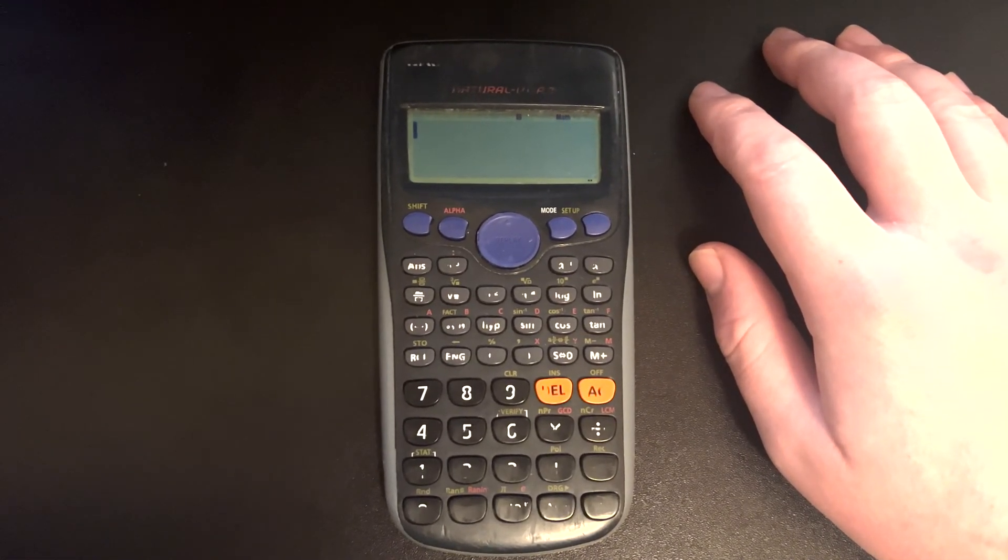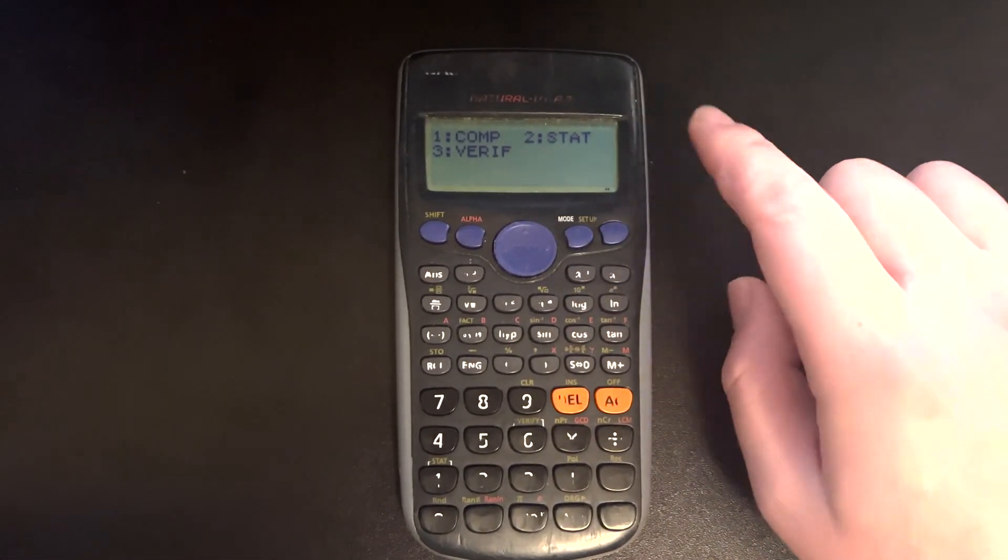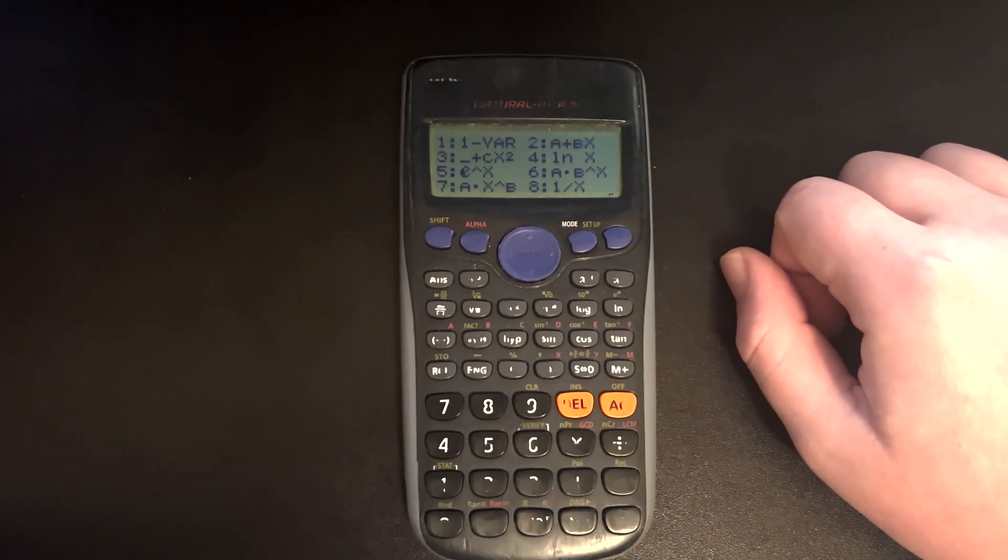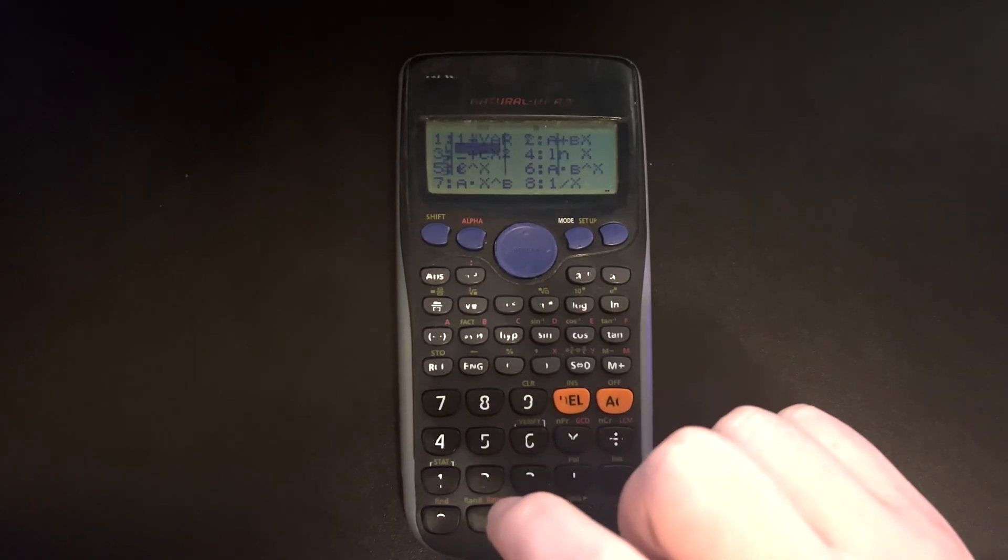The first thing we're going to do is put our calculator into stats mode. Press mode and then 2. Then after that, we'll select option 2 for a plus bx.